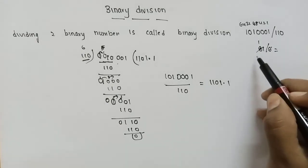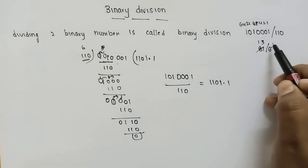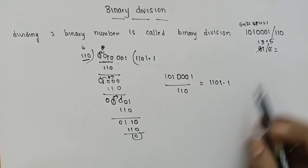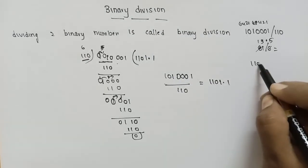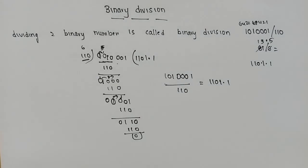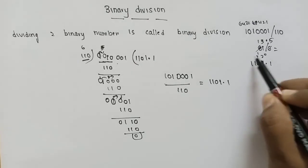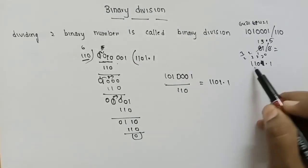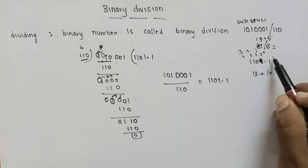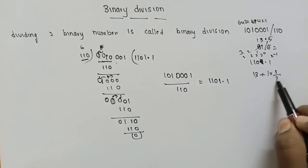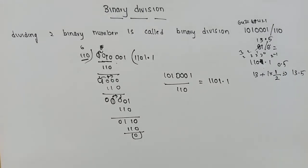81 divided by 6: 6 goes 13 times — 6 times 13 is 78, remainder 3, giving 13.5. Now verifying in binary: 2 power 0, 2 power 1, 2 squared, 2 cubed — 8 plus 4 is 12, plus 1 is 13, plus 1 into 2 power minus 1 which is 1/2 = 0.5. So the result is 13.5.